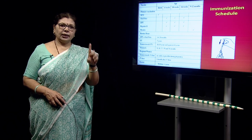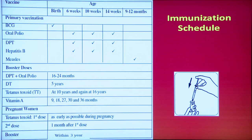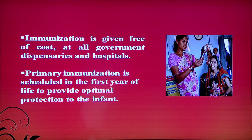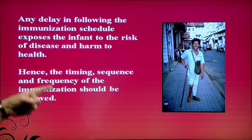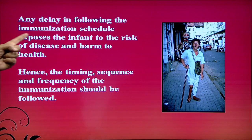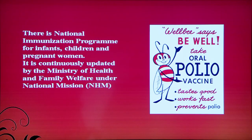The national immunization schedule: at birth, BCG is given; at 6 weeks, oral polio, DPT, and Hepatitis B are given, with booster doses at 10 weeks and 14 weeks. At 1 year, the measles vaccine is given. At 16–24 months, DT, DPT, and oral polio boosters are given. Vitamin A drops (not a vaccine) are given at different age groups. Tetanus toxoid is given during pregnancy. Immunization is provided free of cost at government hospitals and dispensaries.